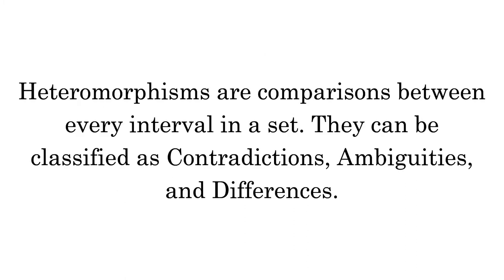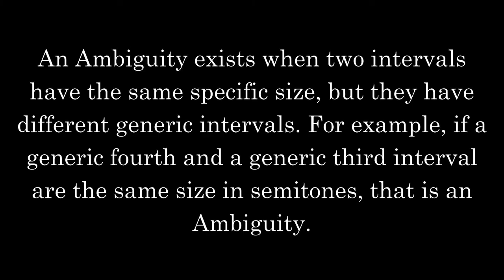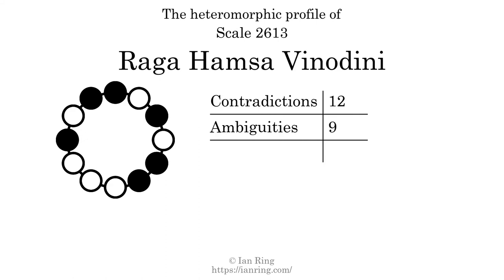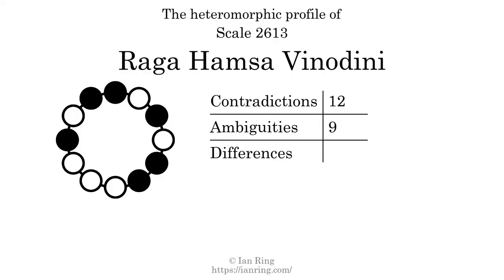Heteromorphisms are comparisons between every interval in a set. They can be classified as contradictions, ambiguities, and differences. A contradiction exists when a small generic interval has a bigger specific size than a larger generic interval. An ambiguity exists when two intervals have the same specific size but different generic intervals. A difference exists when two intervals have the same generic size but different specific sizes, such as a major third and a minor third. The number of contradictions in this scale is 12, the number of ambiguities is 9, and the number of differences is 55.